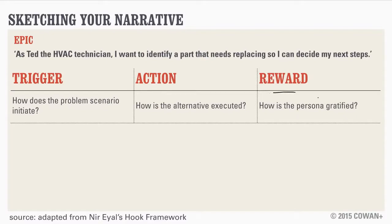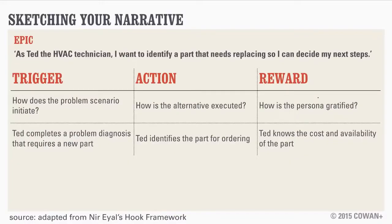Finally, we have the reward, where the user has some kind of conclusion to this story — even if it's really small and discreet. The persona is gratified, they understand that they're done, and they can move on to the next thing. For this epic, it looks something like: Ted completes a problem diagnosis that requires a new part, so he wants to find the part in the H&H system to see how long it'll take and how much it'll cost so he can talk to the customer. Does Ted walk away with that understanding or not? That's how we would test it.